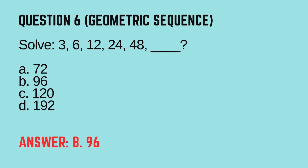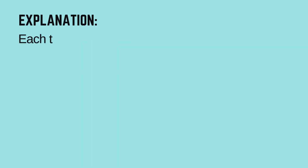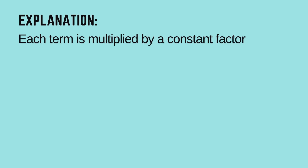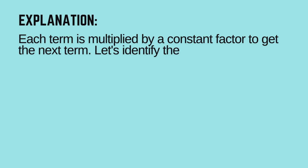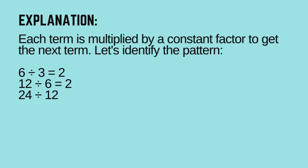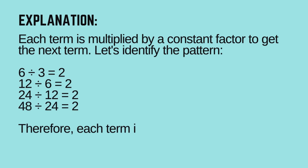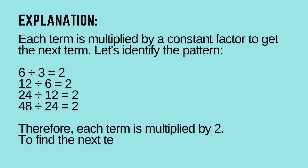The correct answer is B — 96. Let's learn how. In this geometric sequence, each term is multiplied by a constant factor to get the next term. Let's identify the pattern: 6 ÷ 3 = 2, 12 ÷ 6 = 2, 24 ÷ 12 = 2, 48 ÷ 24 = 2. Therefore, each term is multiplied by 2. To find the next term, 48 × 2 = 96.